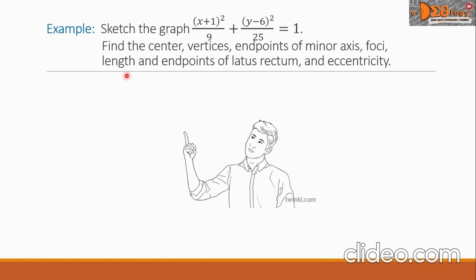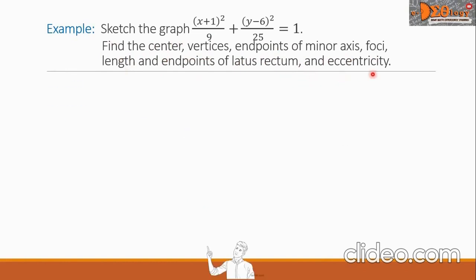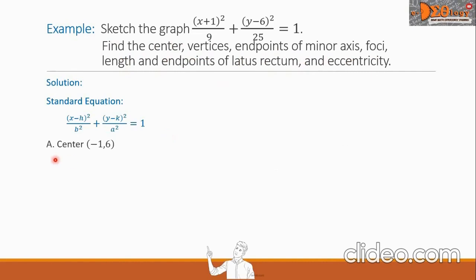Let us now see this example. Sketch the graph, find the center, vertices, endpoints of the minor axis, foci, length and endpoints of the latus rectum, and eccentricity. First, let us write the standard equation. For letter (a), we will find the center, which is (h, k). Since this term is (x+1), h equals negative 1, and since this term is (y−6), k equals 6. So the center is (−1, 6).